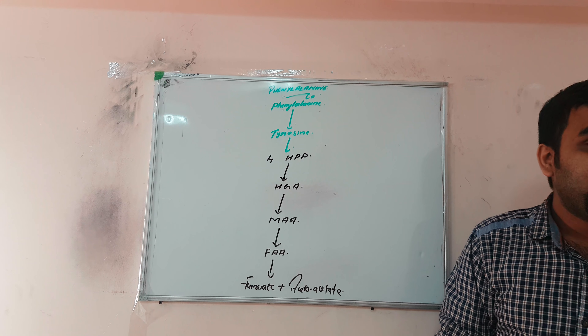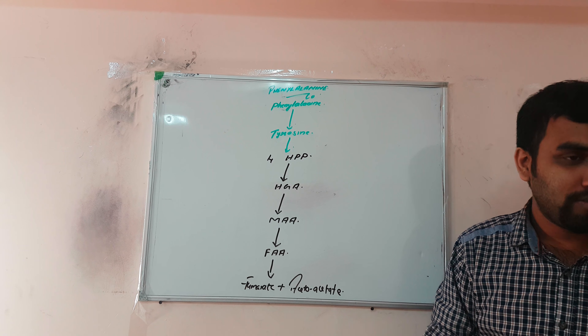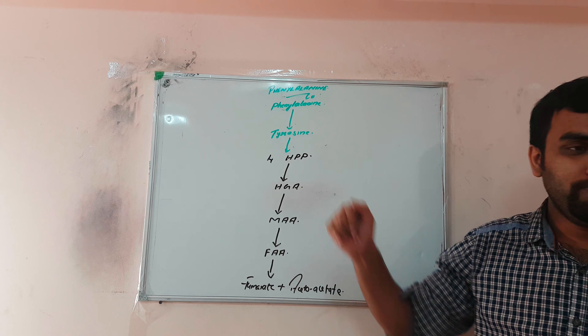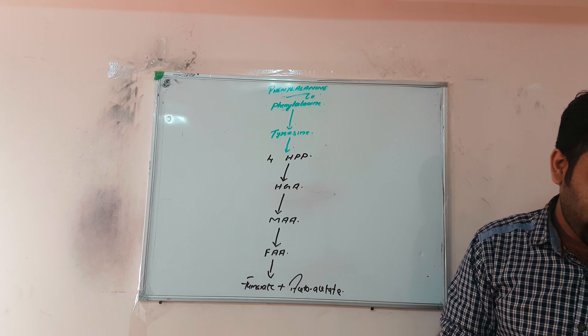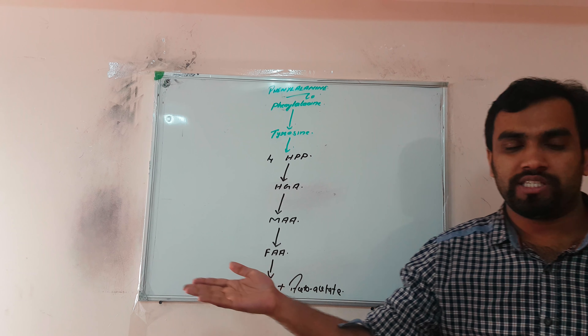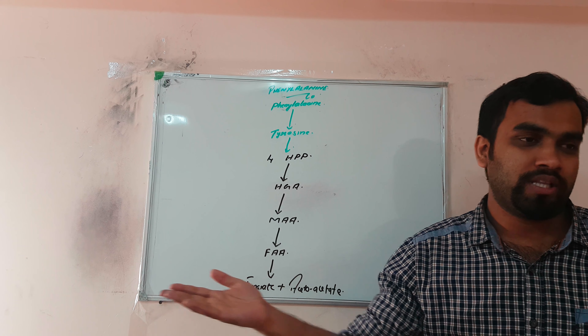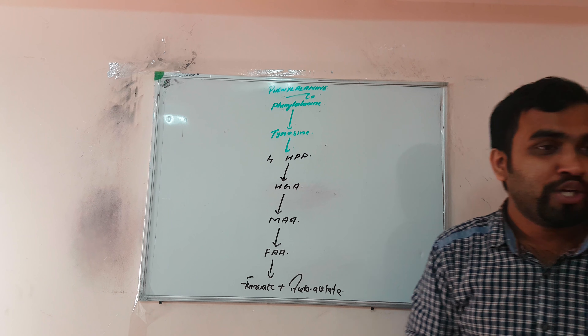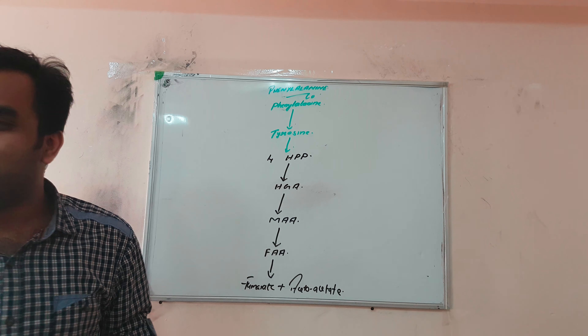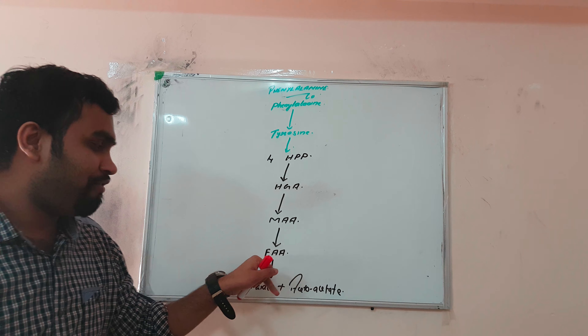At that time the mother was working downstairs. She got disturbed and came upstairs. You won't stop the party for her — this poor mother won't say anything, she just says 'don't stop.' So MAA came and nothing happened. After some time, your father came from the office after his work — that is our FAA.